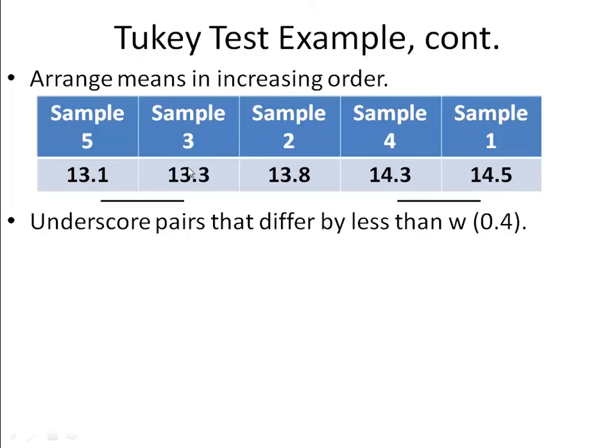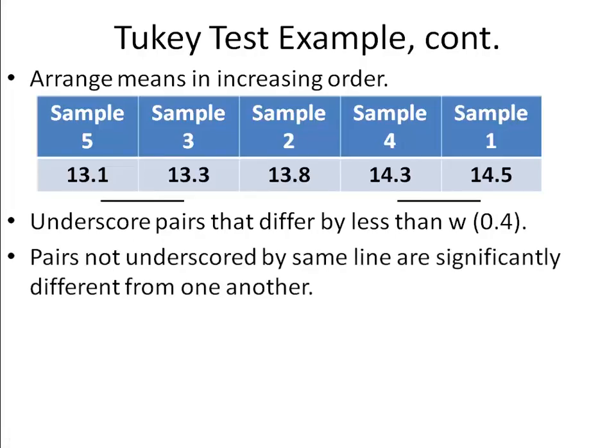And similarly, sample 3 differs from sample 5 by 0.2, so we'll underline that as well. And so, the pairs that are not underscored by the same line are statistically significant from one another.